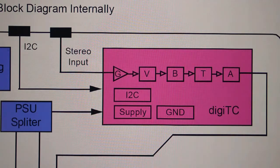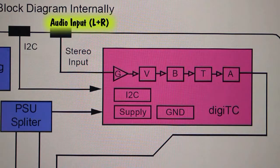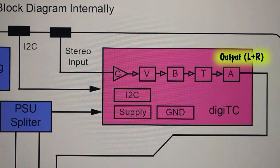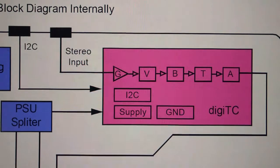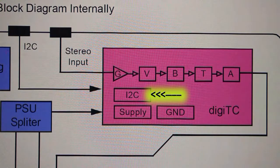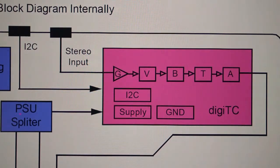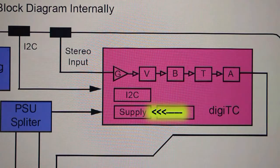As its name implies, it is basically a tone control. It accepts an audio signal — the left and right stereo input — which is fed into the gain block of the circuit. The output is again an L+R stereo signal, and it is fed into the EQIC solution. The other input of the DGTC IC is the I2C control, which is basically a protocol to control and access the IC.